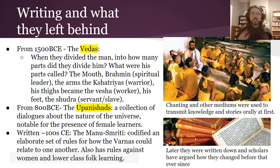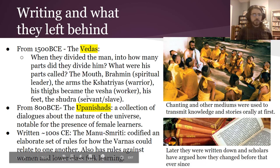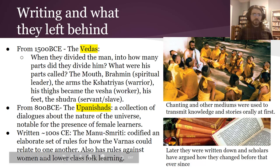And how did things change during the Mauryan Empire and all of that? From about 1500 BCE, that's when the Vedas start being created. Here's an example of a piece of text from the Vedas.